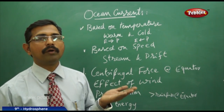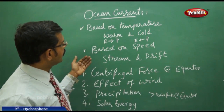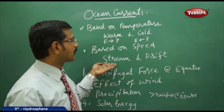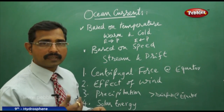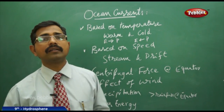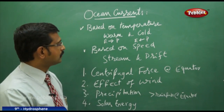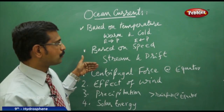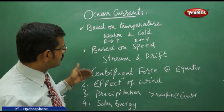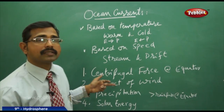Based on temperature we have warm and cold ocean currents. Based on speed, we also have two types: stream ocean currents, which are relatively fast, and drift ocean currents, which are very slow. So ocean currents are divided into stream and drift based on their speed.